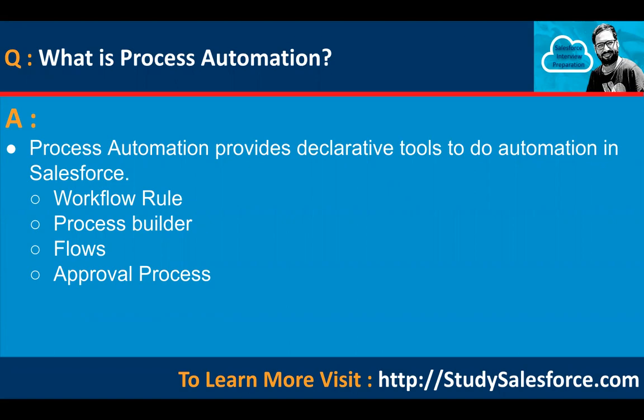The first question is related to what is process automation. Process automation provides declarative tools to do automation in Salesforce. We have four options: workflow rule, process builder, flows, and approval process.